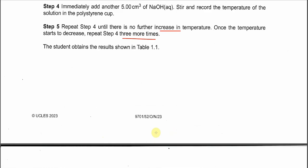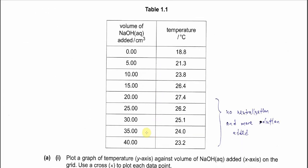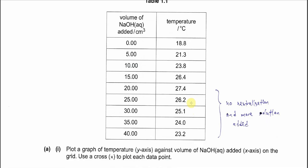Table 1.1 shows the volume of sodium hydroxide added from 0 to 40 cm³ against temperature. The temperature increases, and after 27.4°C it starts to decrease. After this point the temperature decrease is due to two factors: heat loss to surroundings, and the fact that we keep adding solution which dilutes and lowers the temperature.